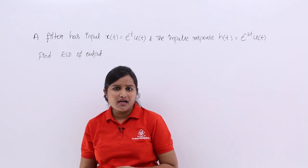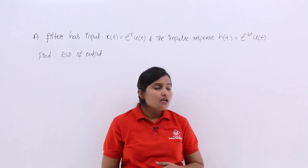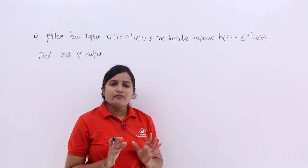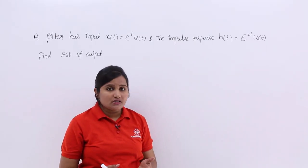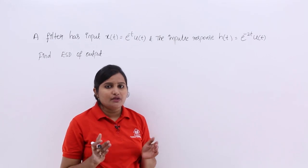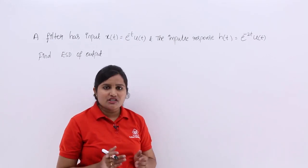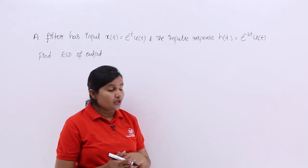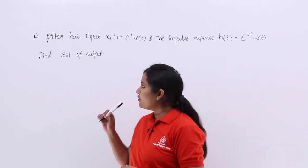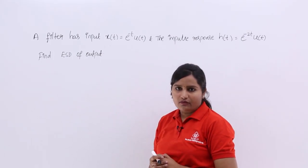Why are they asking for energy spectral density specifically? Because the signals given are energy signals. Signals of the form e^(-at)u(t) are energy signals with energy 1/(2a). Since they are energy signals, they are asking for the energy spectral density of the output signal.